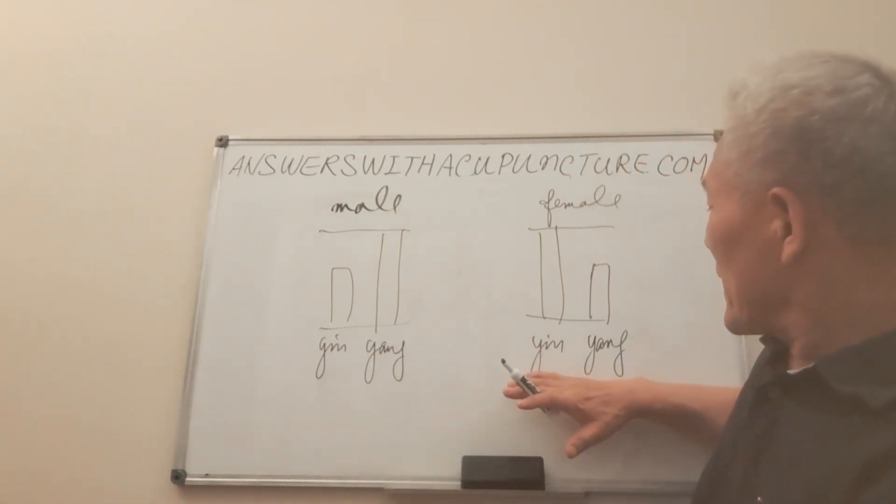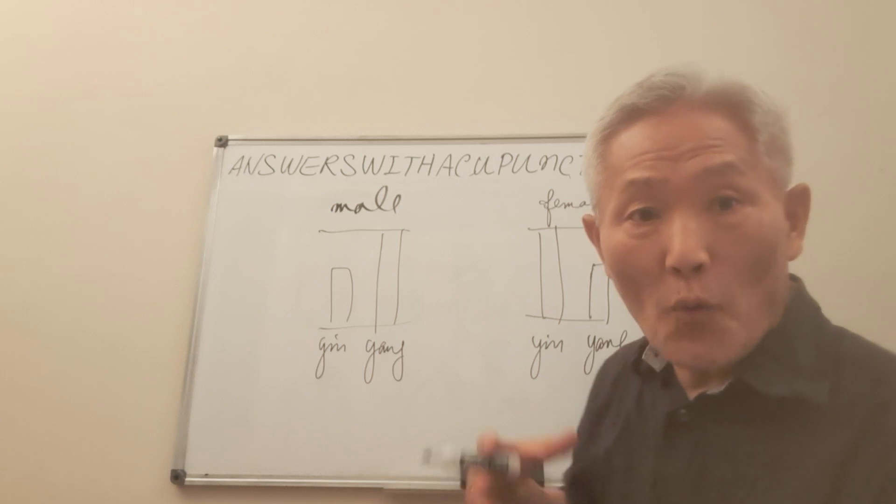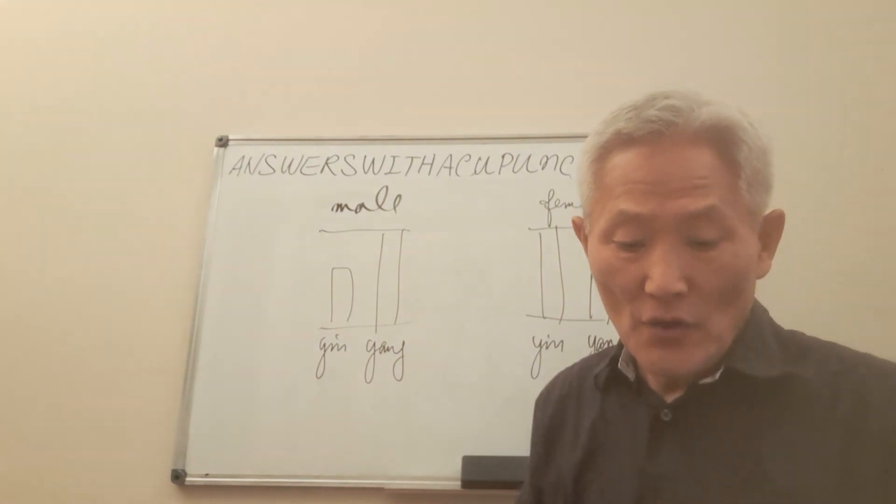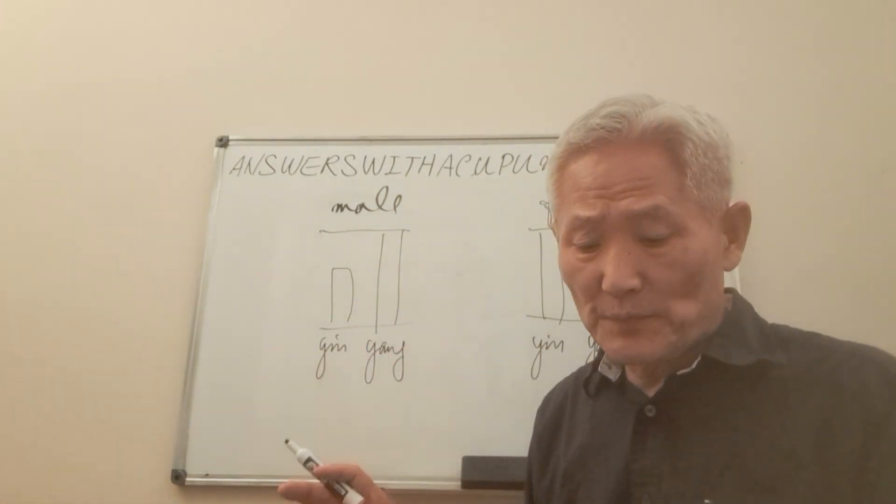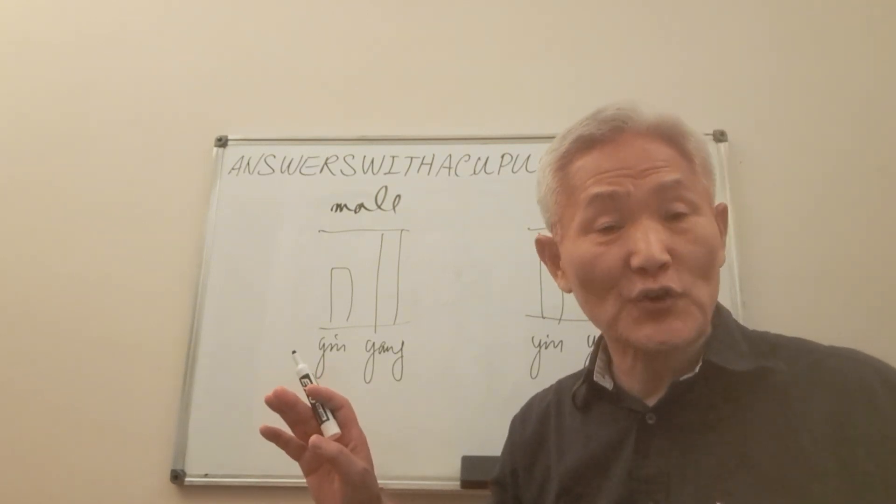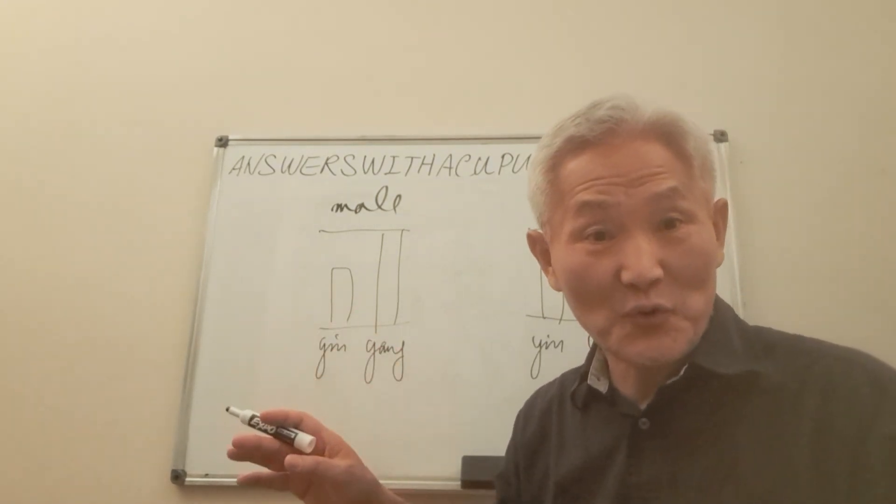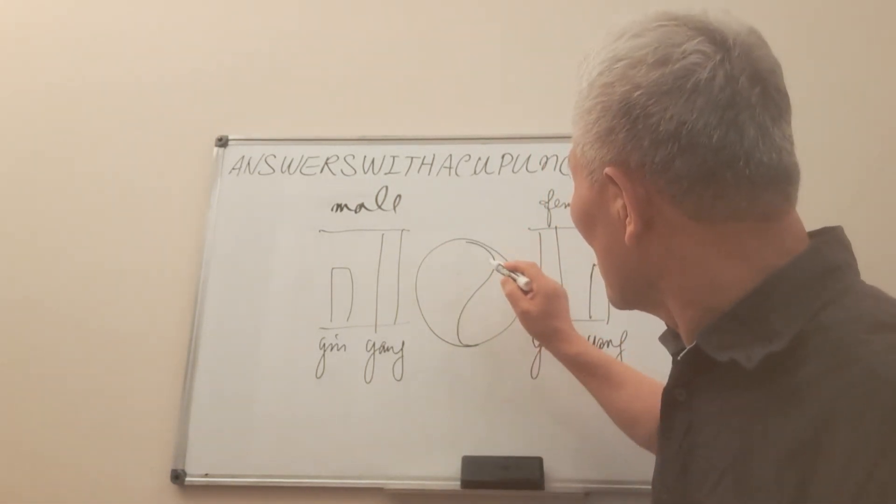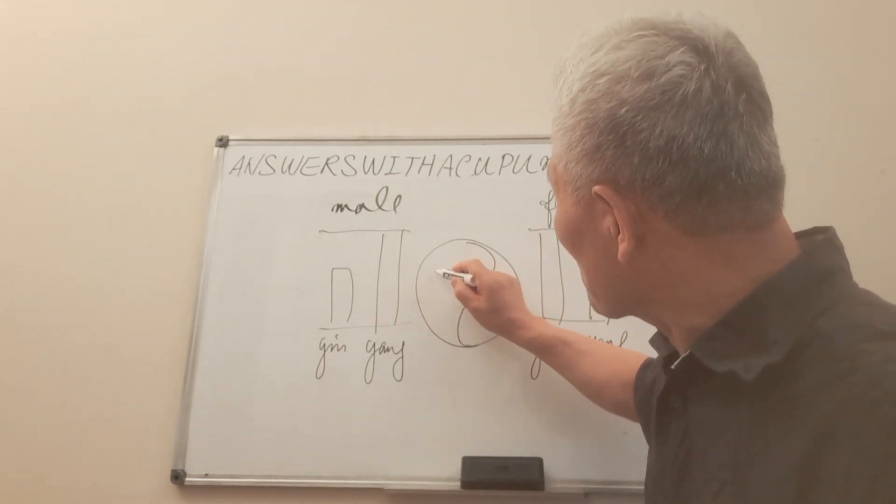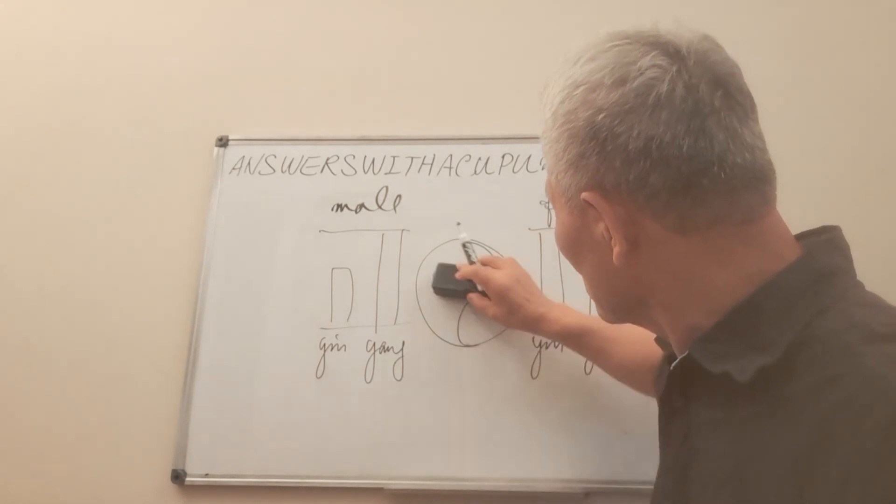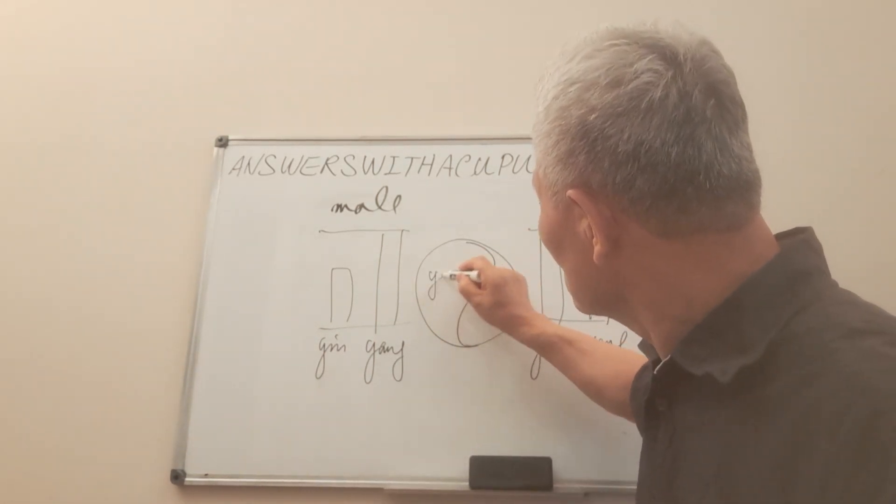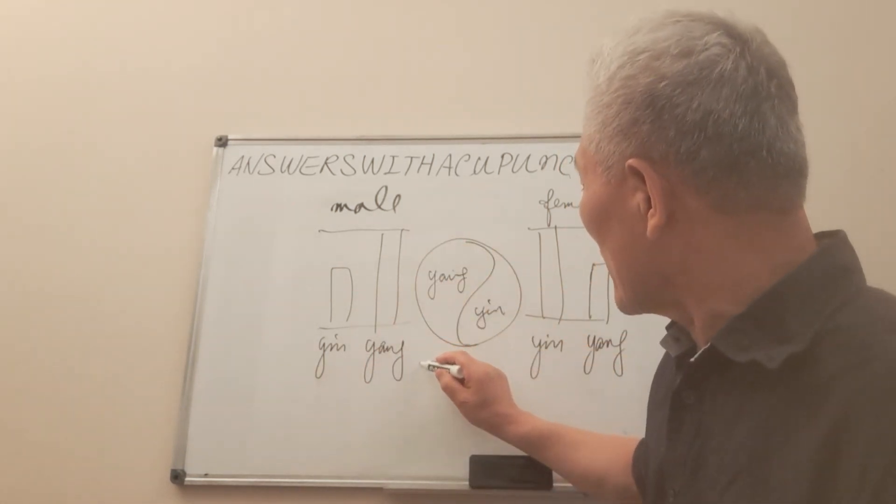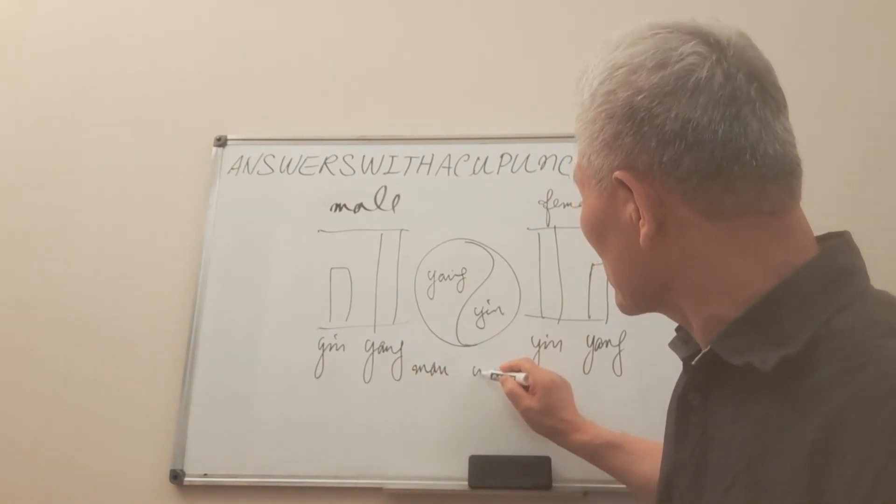So female has a component more cold than just yang itself. So this difference is that when I draw the picture, then you are able to understand it easier. Let's say here, this is yang part, this is yang, and this is yin. Now, we can say this side is man and this side is woman.